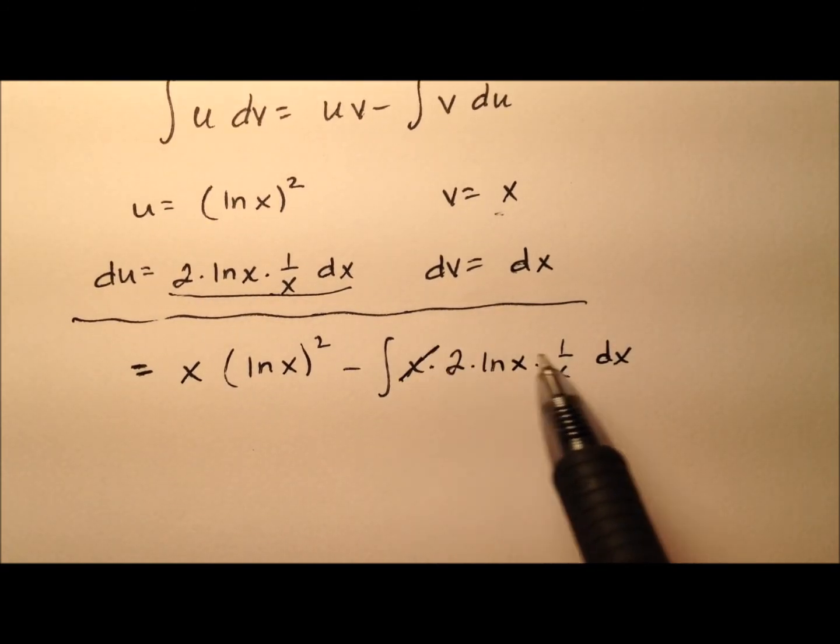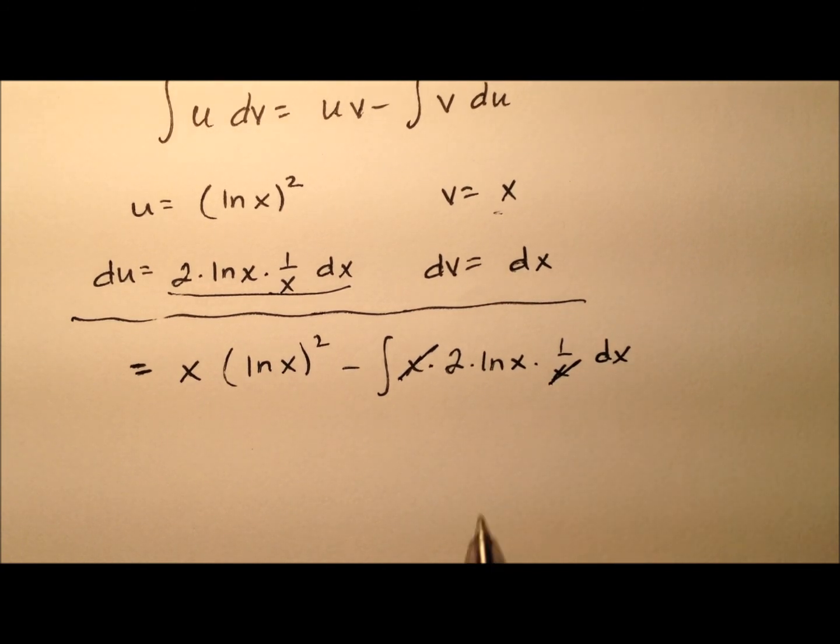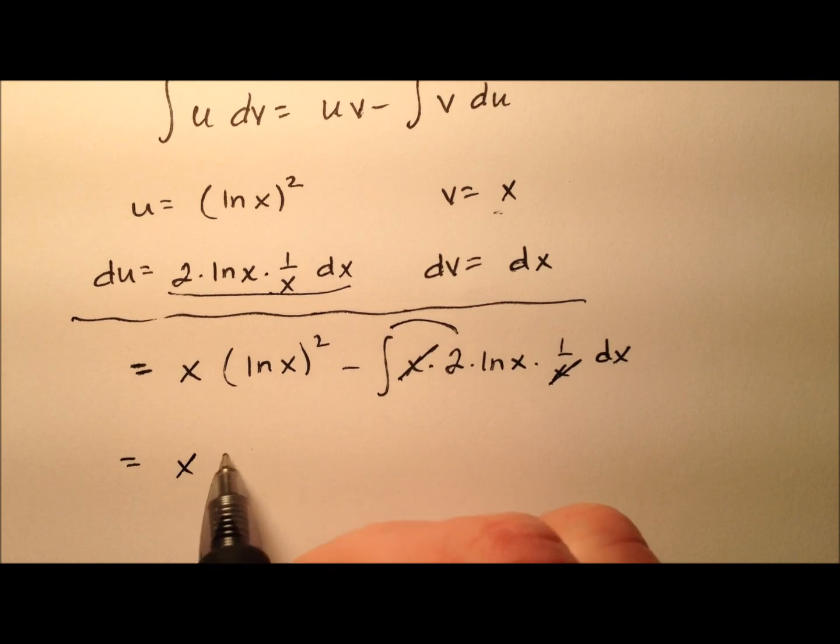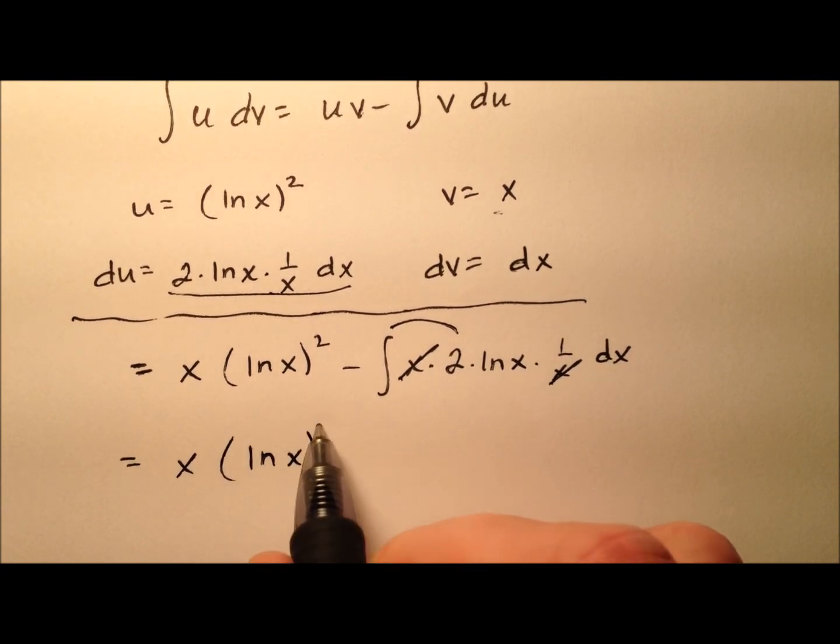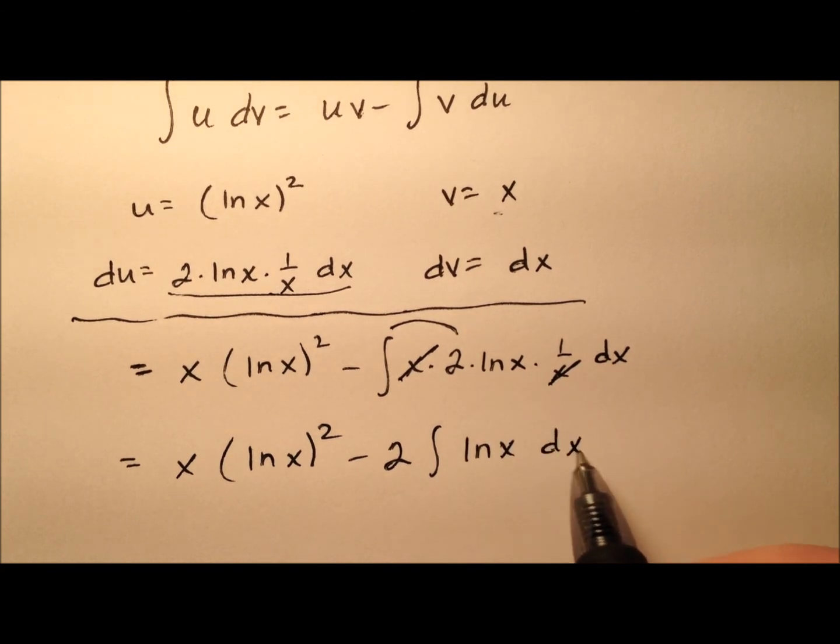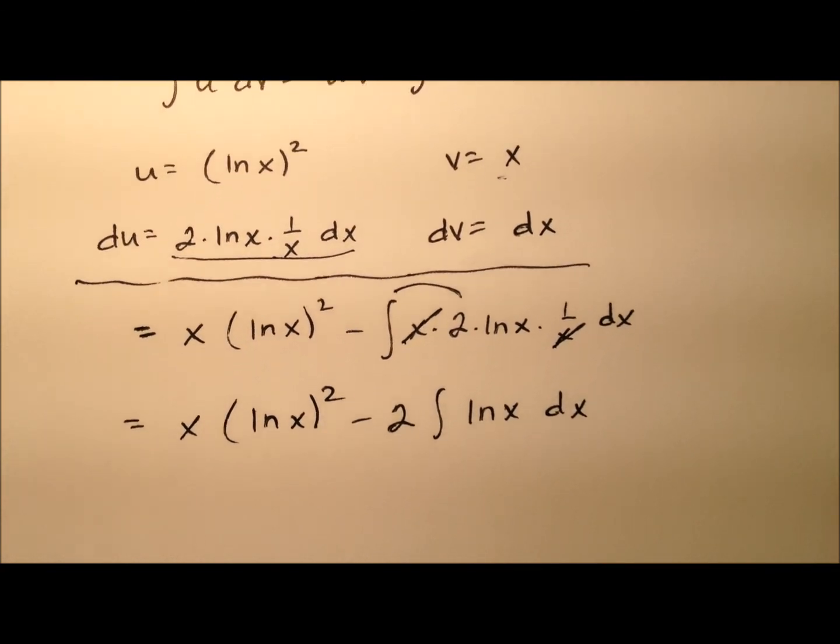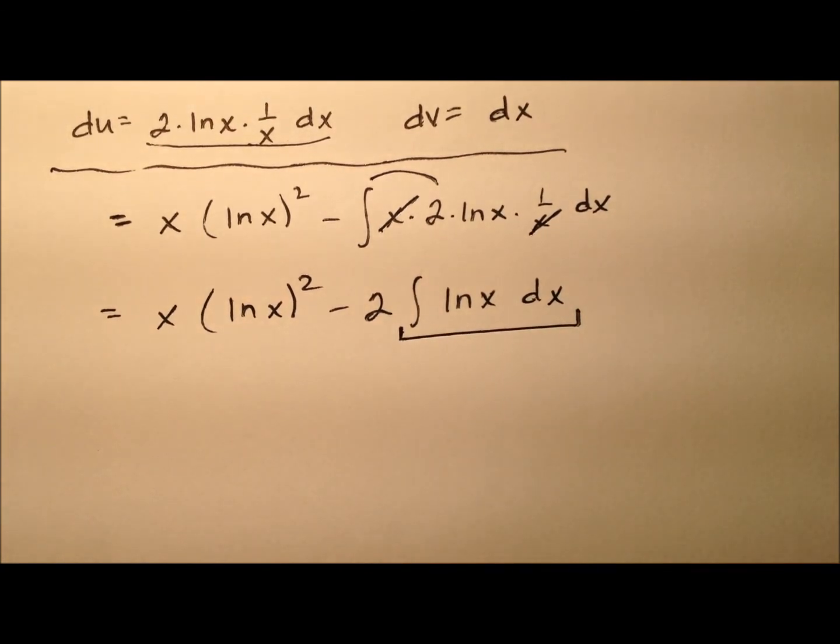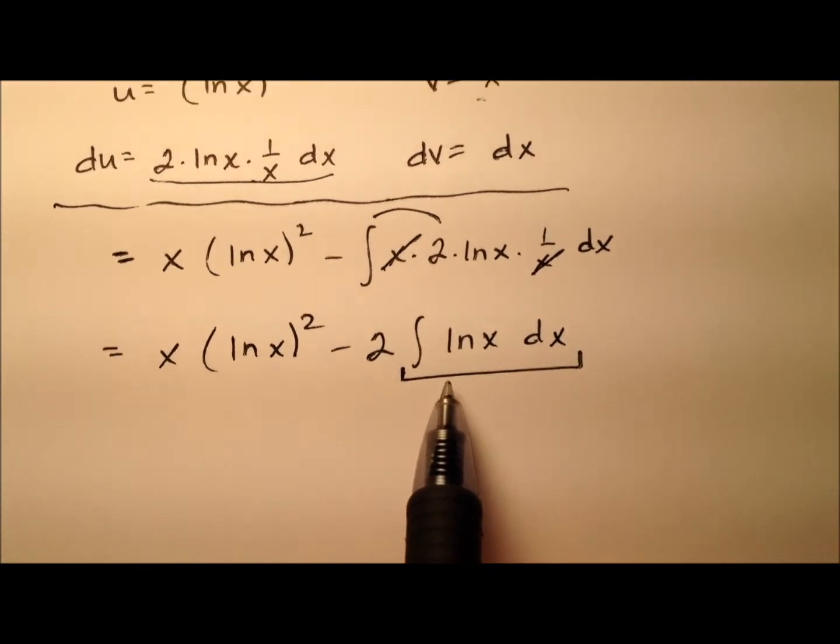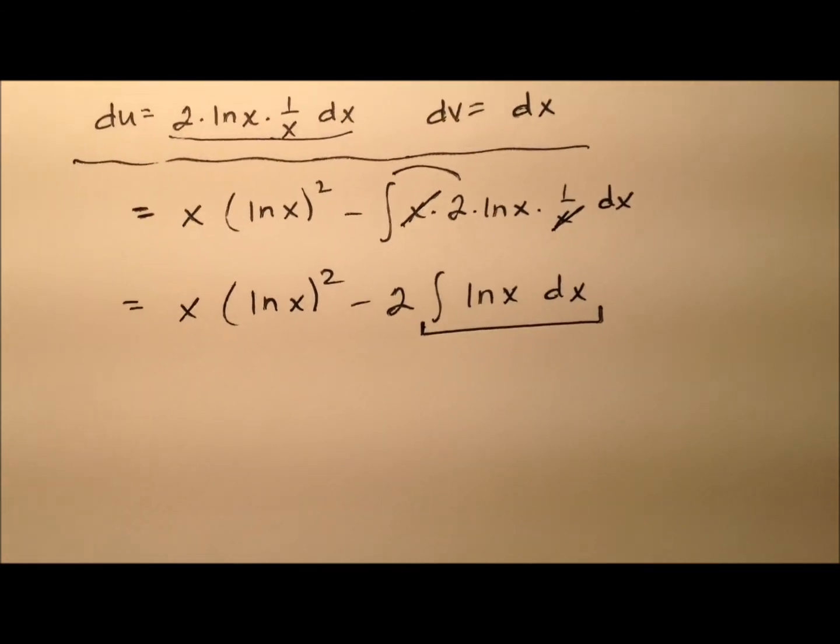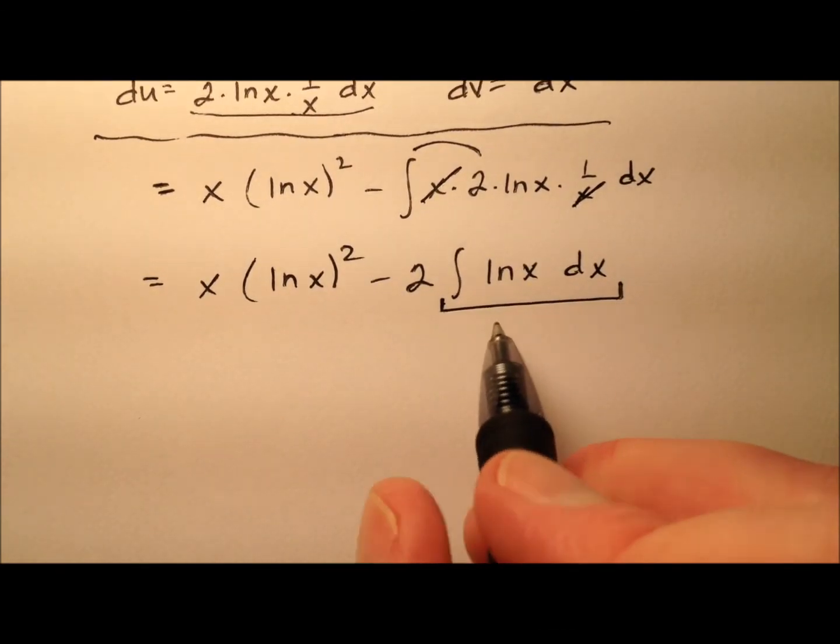Well, this isn't so bad because these x's will cancel. And 2 is a constant, so I can bring them out front of this integral. And I can rewrite that as minus 2 times the integral of the natural log of x dx. So to find this integral, now it's just the natural log of x where initially we had the square of the natural log of x. We've kind of whittled the powers down.